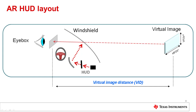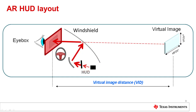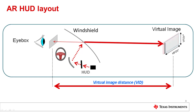This is a typical layout of an AR HUD. The HUD is located below the car's dashboard and consists primarily of the projector, diffuser, and large free-form mirror. The projector and diffuser screen make up the picture generation unit, or PGU, and form a real image on the diffuser screen. The light from this image is then reflected off the free-form mirror and again off the windshield to be redirected into the driver's eye box. The virtual image is projected at the virtual image distance, or VID, and the size of the image is determined by the horizontal and vertical field of view, or FOV.